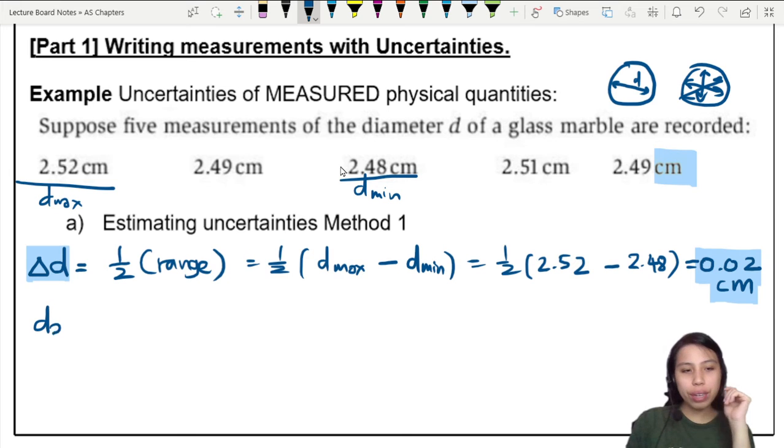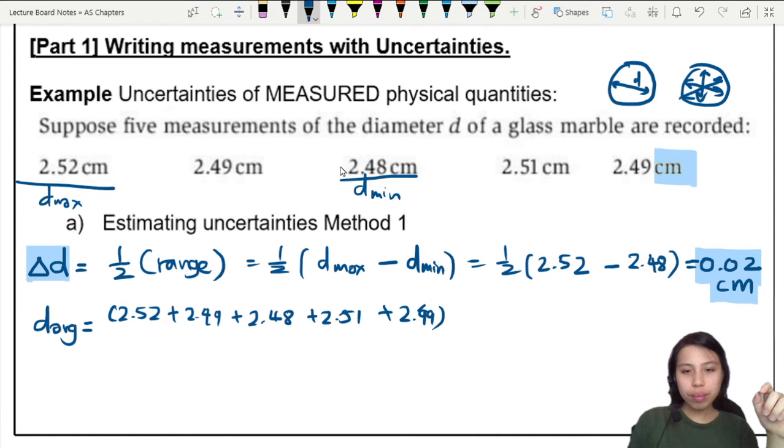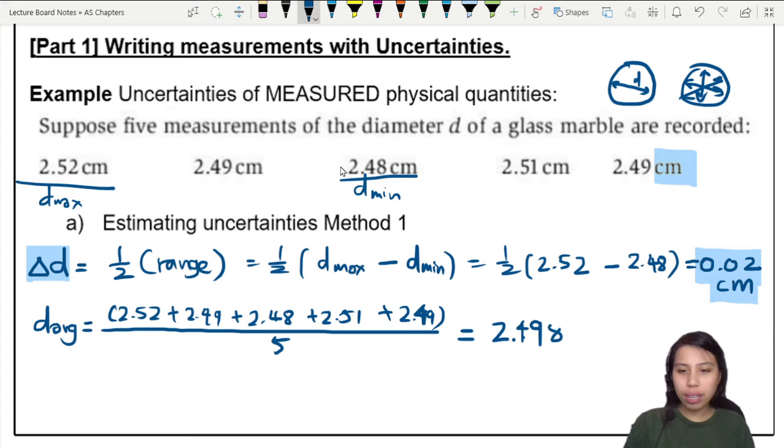Usually, you will want to write it with the actual value of D. So maybe I can find the average diameter. How do you find average? You add up all together. 2.52 plus 2.49 plus 2.48 plus 2.51 plus 2.49. Divided by the number of measurements there. So that's 1, 2, 3, 4, 5. So I write 5. And our average will be 2.498. My calculator says 498. Okay, 2.498 cm. So that's great. Now I have my average and I have my cm.